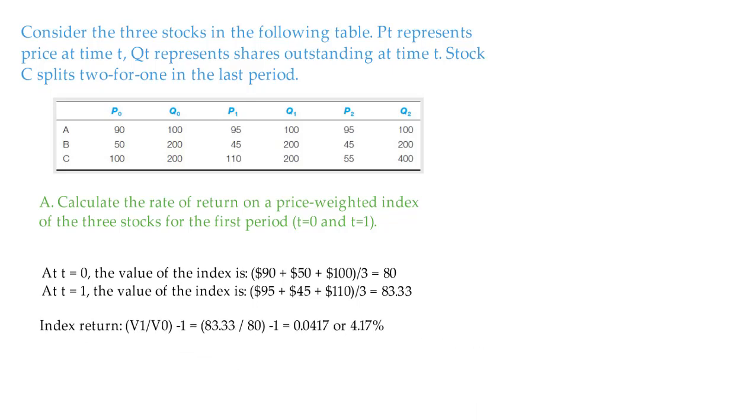The rate of return is value in the first period divided by value in the zero period, minus 1. Meaning, you divide 83.33 by 80, subtract 1. You get 4.17%. In this example, 80 and 83.33 are your index values.